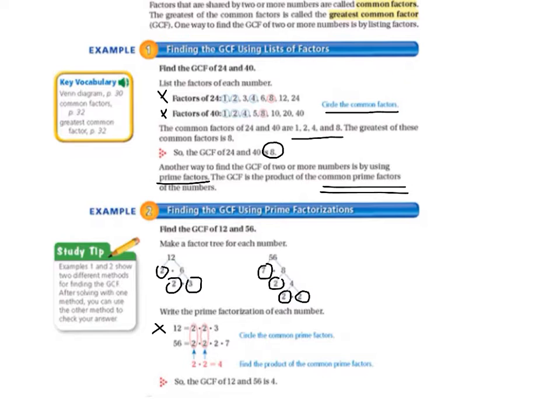2 times 2 is 4. So the prime factorization for each number looks like this. 12's prime factorization is 2 times 2 times 3. And 56's prime factorization is 2 times 2 times 2 times 7.